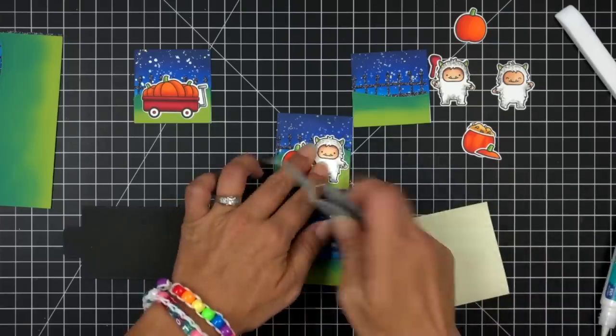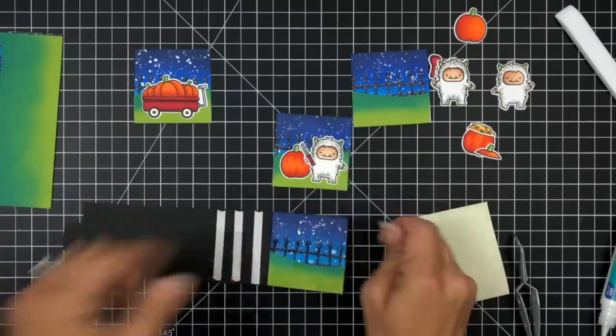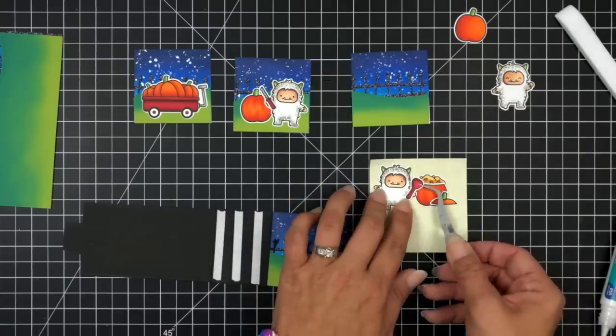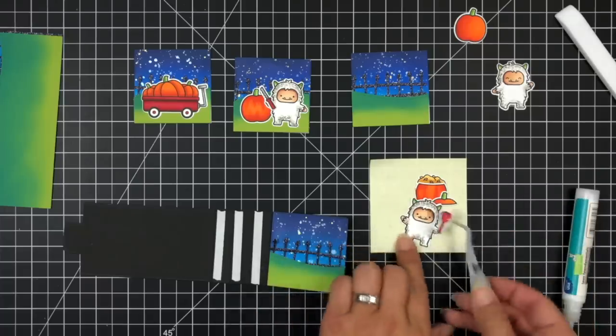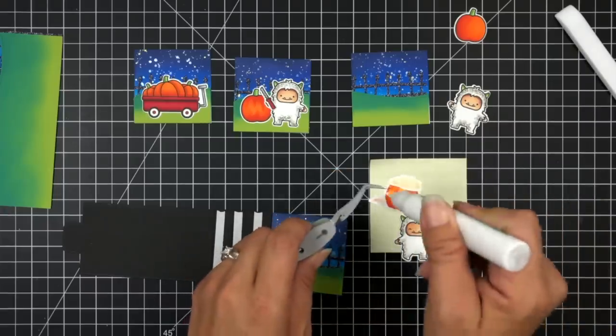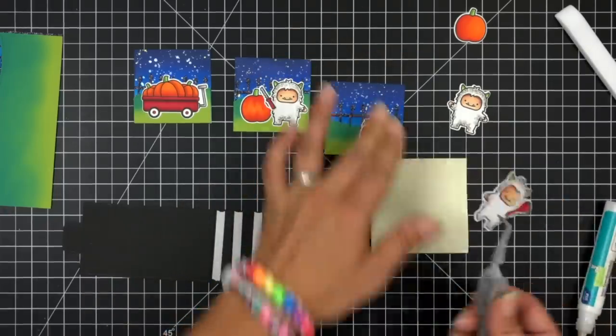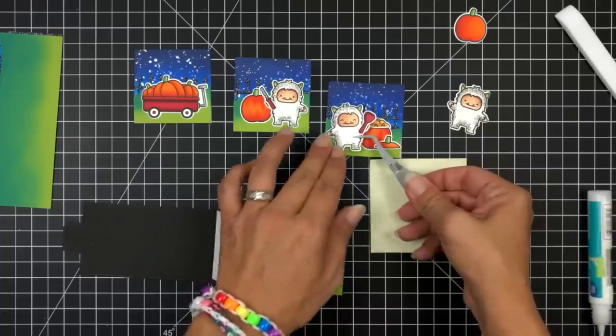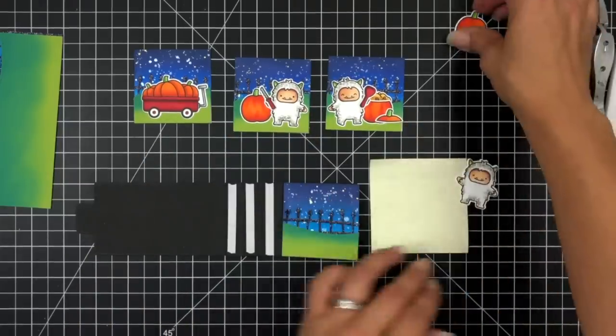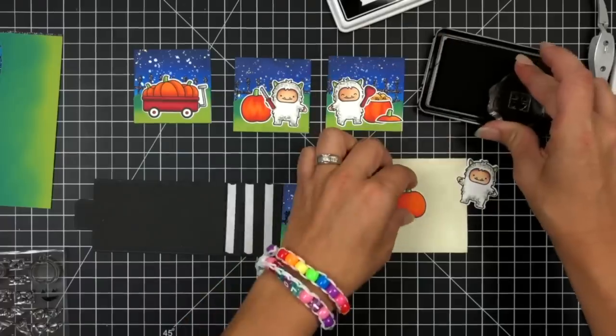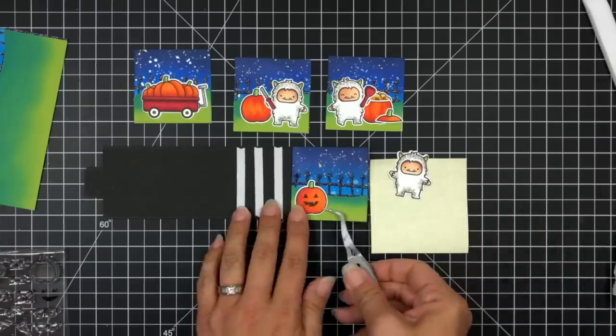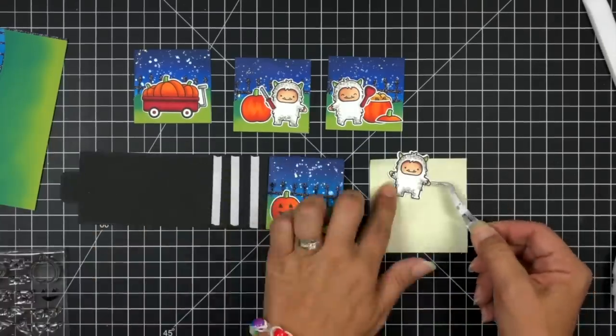And my third scene is going to be my yeti scooping out the pumpkin. The pick of the patch stamp set also has different faces that you can add to your pumpkins and I will be doing that here shortly to the one that's going to go in my end scene, the yeti that's going to be all happy that his pumpkin is done. I'm just going to take one of the faces and attach that to an acrylic block and stamp that onto the front of my plain pumpkin with some jet black ink. So just inking that up really well, lining that up in the middle and then stamping that down. Then I can add that to my last panel, that'll be my end scene.